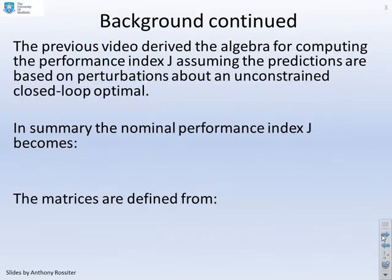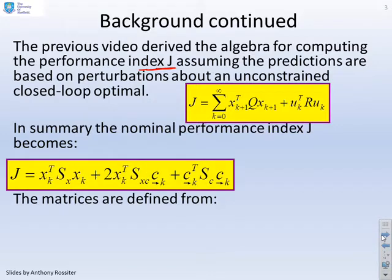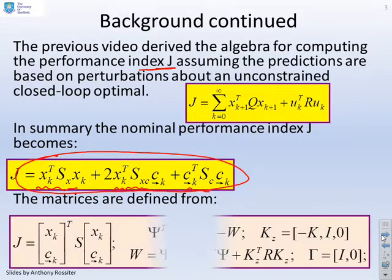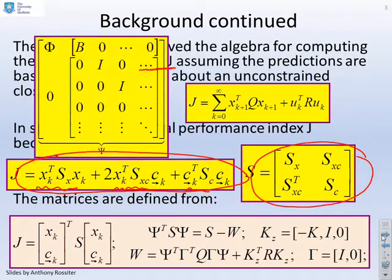The previous video went through the algebra for computing this performance index and its dependence upon those perturbations. Taking our performance index over the infinite horizon — with X-transpose QX and U-transpose RU terms summed over an infinite horizon — substituting our predictions, J reduces to a form with a quadratic term in X, a term depending on X and C, and a quadratic term in C. The matrices can be defined from this algebra, where S is given by a specific matrix. The key thing is these matrices are well-defined and easy to compute.